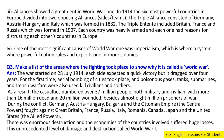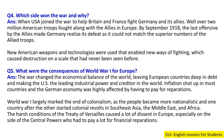During the conflict, Germany, Austria-Hungary, Bulgaria and the Ottoman Empire — the Central Powers — fought against Great Britain, France, Russia, Italy, Romania, Canada, Japan and the United States. There was enormous destruction and the economies of the countries involved suffered huge losses. This unprecedented level of damage and destruction across multiple continents is why it is called a World War.